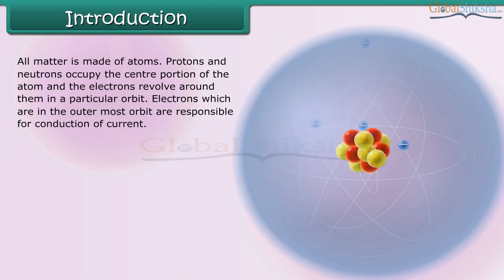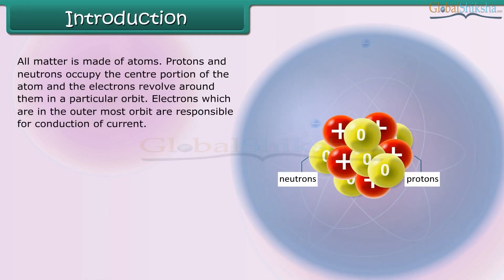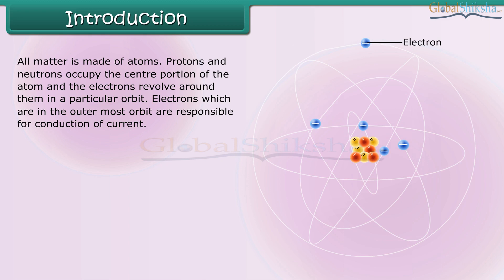All matter is made of atoms. Protons and neutrons occupy the center portion of the atom, and the electrons revolve around them in a particular orbit. Electrons which are in the outermost orbit are responsible for conduction of current.